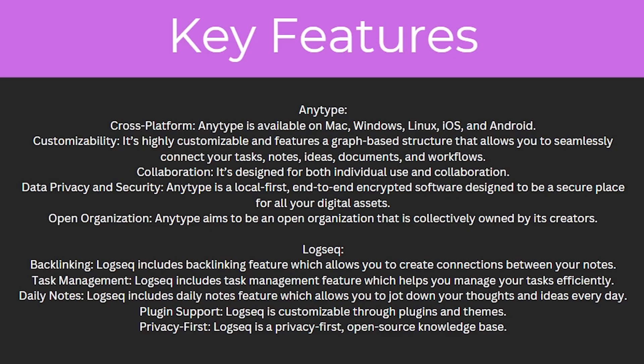So to start with, what are their key features? For Anytype, they have cross-platform support, meaning it's available on Mac, Windows, Linux, iOS and Android. It's also highly customisable and features a graph-based structure that allows you to seamlessly connect your tasks, notes, ideas, documents and workflows. It also has collaboration features as it's designed for both individual use and collaboration, and it's a local-first, end-to-end encrypted software designed to be a secure place for all your digital assets.